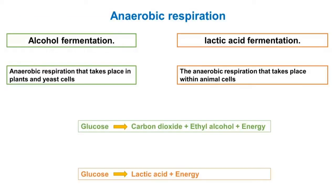When anaerobic respiration takes place in plants and yeast cells, it is called alcohol fermentation. It turns glucose into carbon dioxide and ethyl alcohol, other than energy. When anaerobic respiration takes place within animal cells, it is called lactic acid fermentation. It turns glucose into lactic acid and energy.